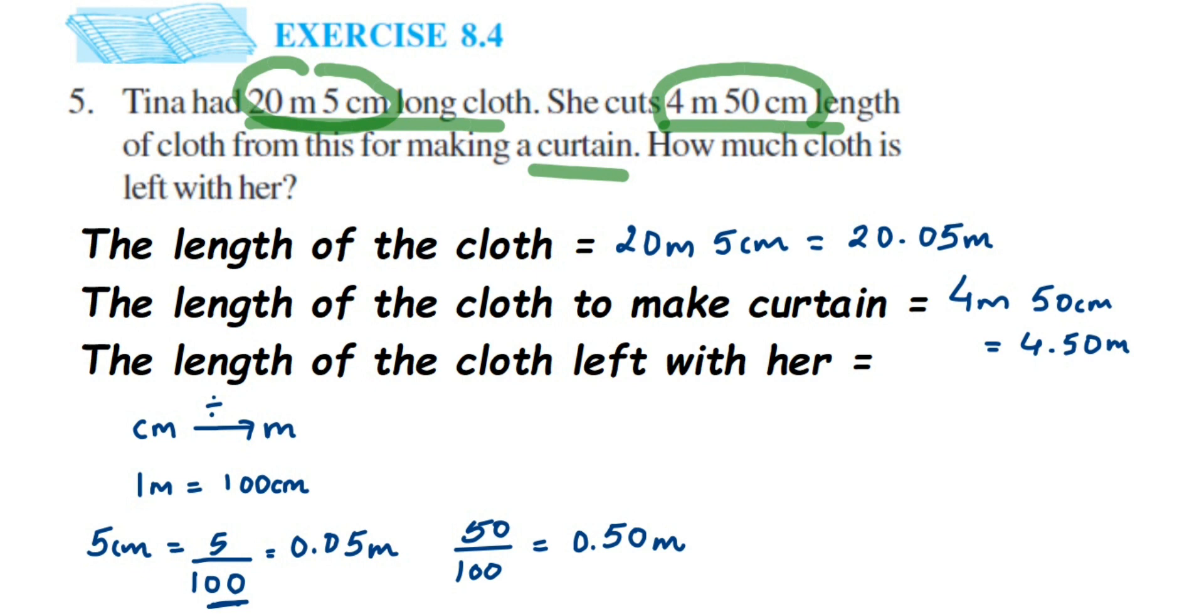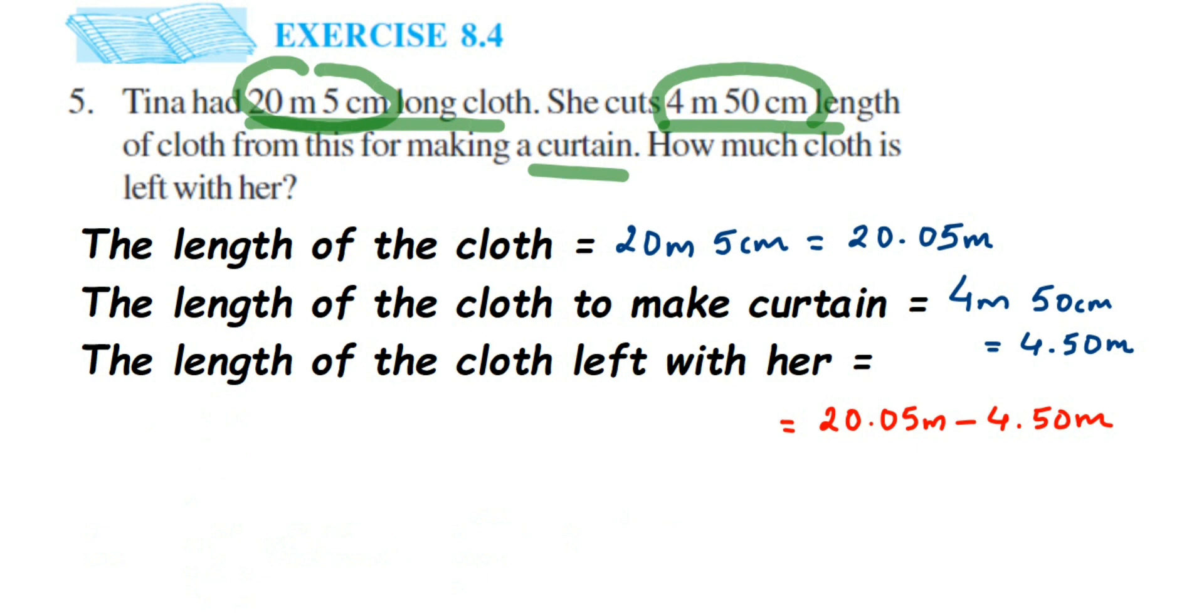Now everything is in meters. You can find the difference to find out the cloth which is left. For that we have to subtract them. So the length of cloth left with her will equal 20.05 meter minus 4.50 meter. When subtracting decimals we're going to use a lining up method. We have to line up the decimals one below the other.